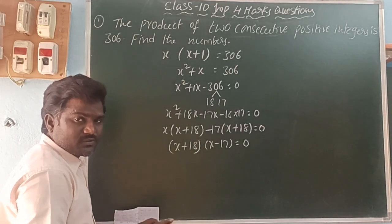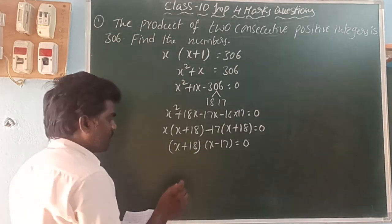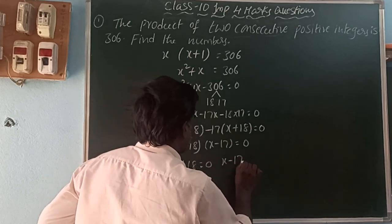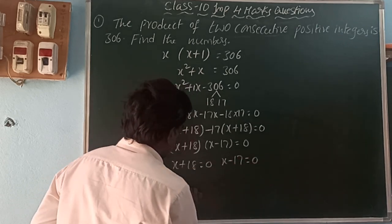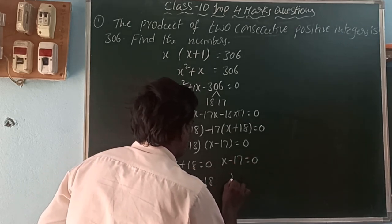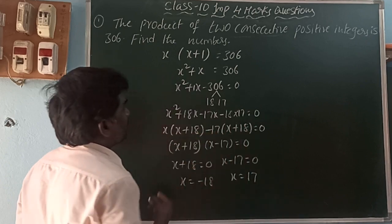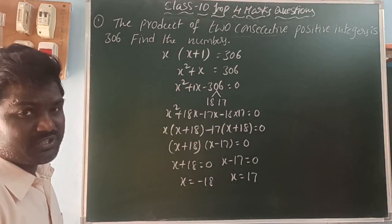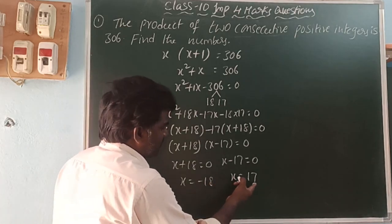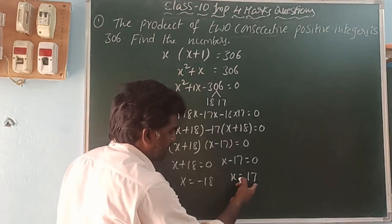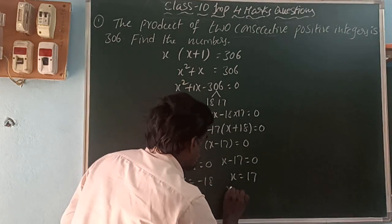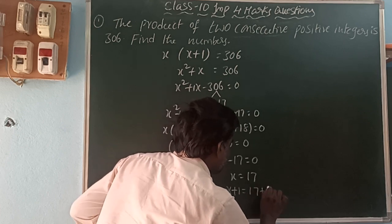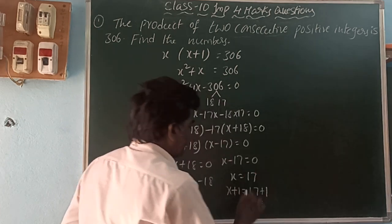From the factored form, (x + 18)(x - 17) = 0, so x = -18 or x = 17. Since the question asks for positive integers, x = 17. The next consecutive number is x + 1 = 17 + 1 = 18.